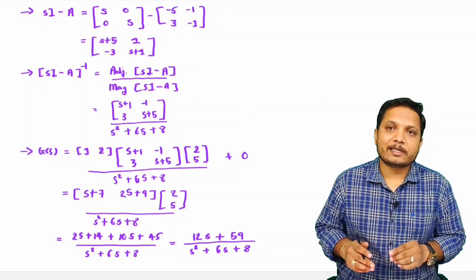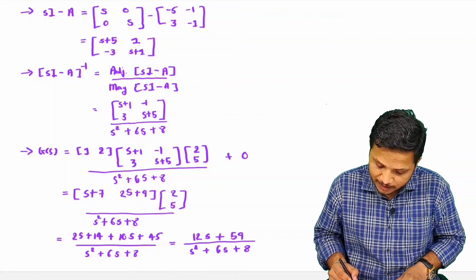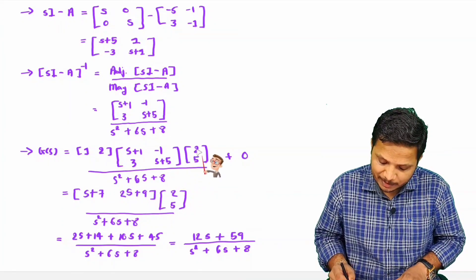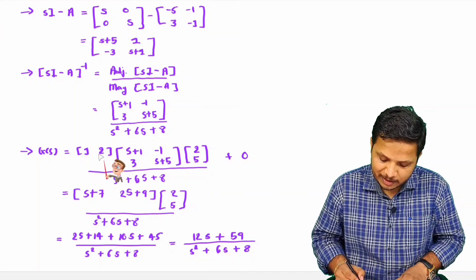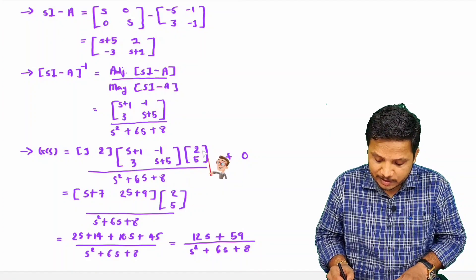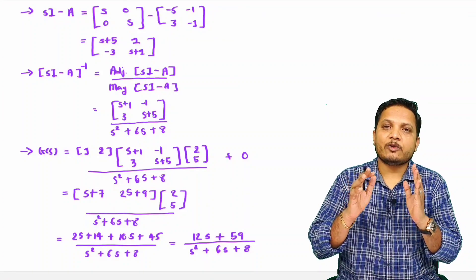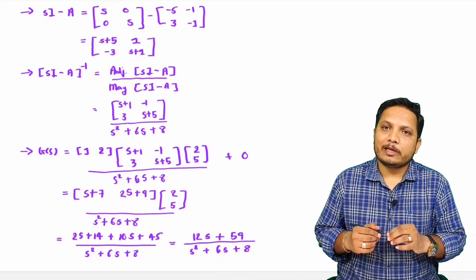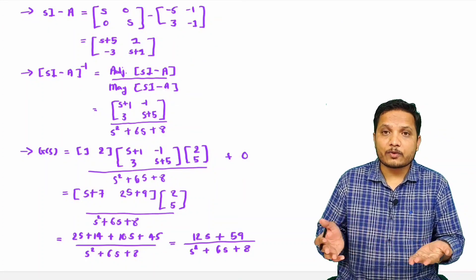Whenever you do this calculation, one thing to take care of is that the matrix multiplication must be in sequence. You can multiply the first two matrices and then multiply the result with the third, or multiply the last two first and then with the first — both are valid. But you cannot multiply non-adjacent matrices out of order, otherwise you will get a false answer. I have seen students making this kind of mistake in examinations, so do take care. I hope you have understood this. Thank you so much for watching this video.